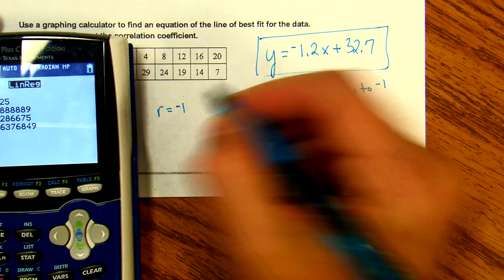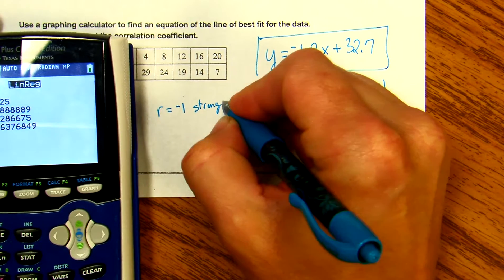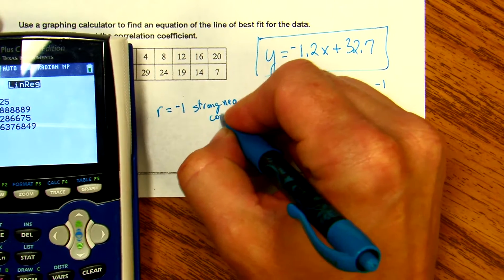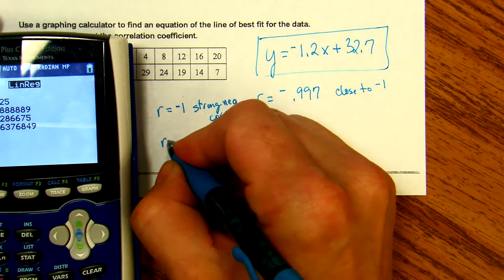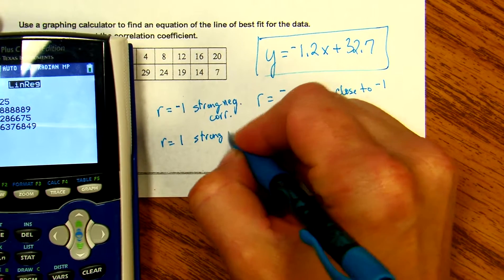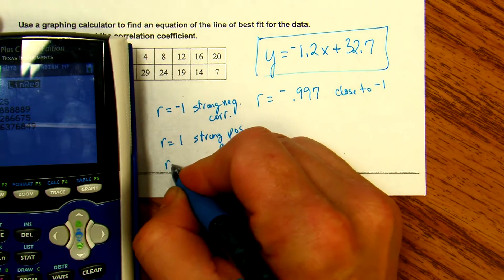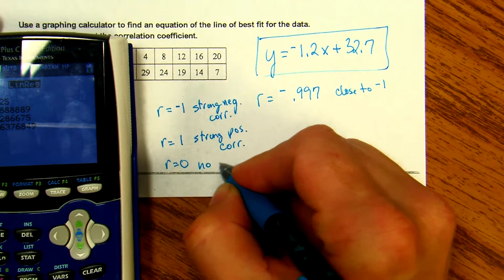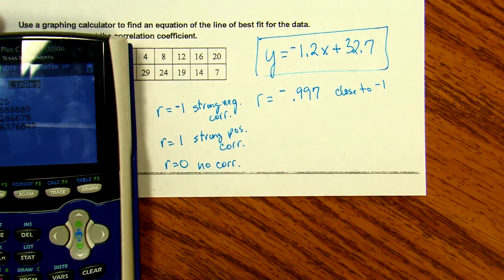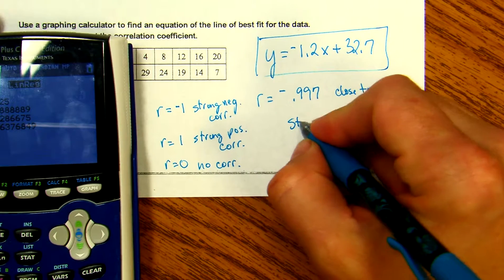And if r is close to zero, there is no correlation. If you notice, this is close to negative one, so this will have a strong negative correlation. So we have our equation and our correlation interpretation, meaning this line is a good fit.